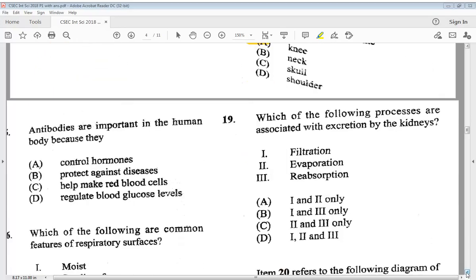Let's go to number 15. Antibodies are important in the human body because they A, control hormones. B, protect against diseases. C, help make red blood cells. D, regulate blood glucose levels. So we know that is B, protect against diseases.